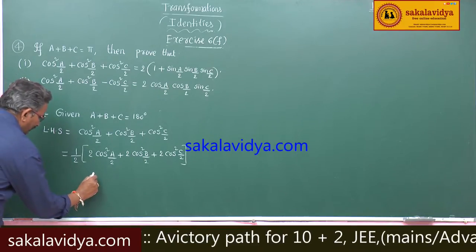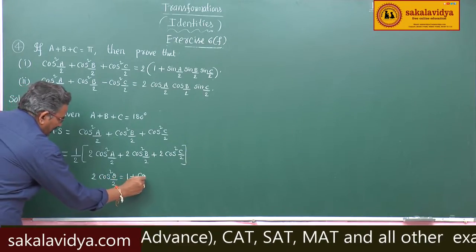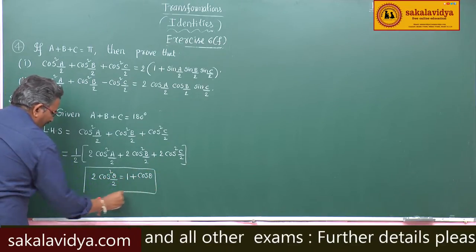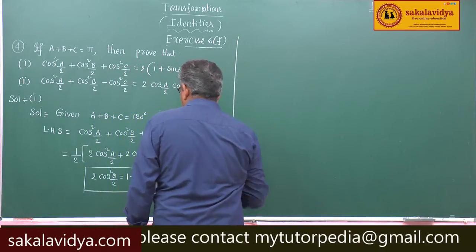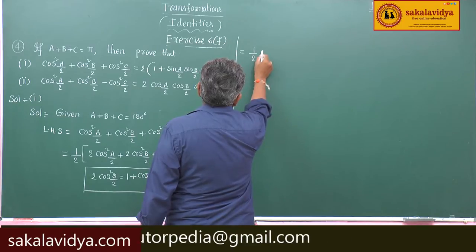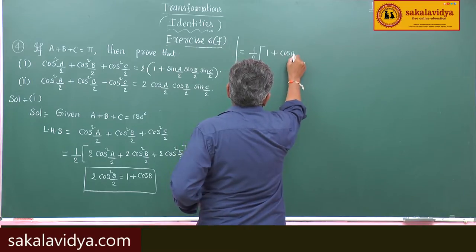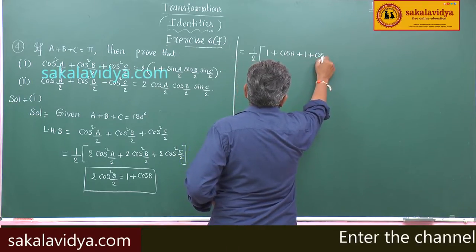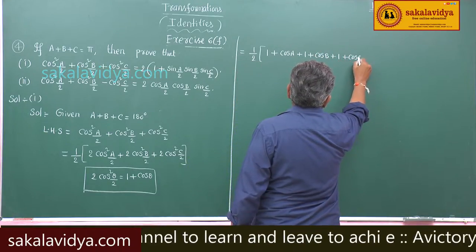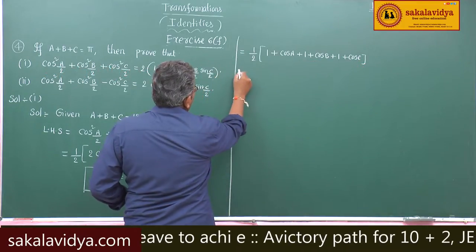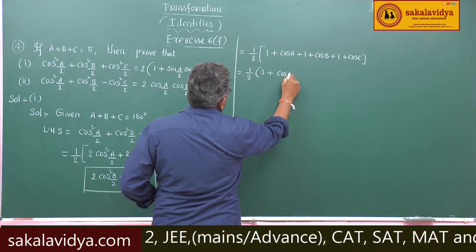We have the formula 2 cos squared theta by 2 is equal to 1 plus cos theta. Applying this, we get 1 by 2 multiplied by 1 plus cos a plus 1 plus cos b plus 1 plus cos c, which simplifies to 1 by 2 multiplied by 3 plus cos a plus cos b plus cos c. Call this equation 1.